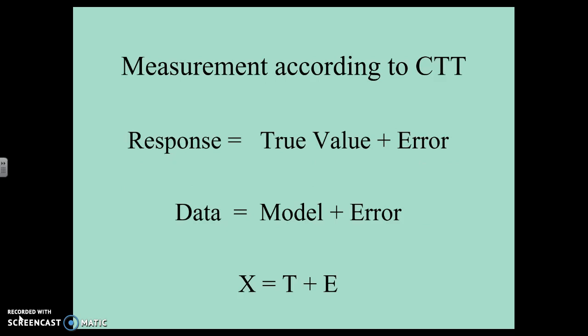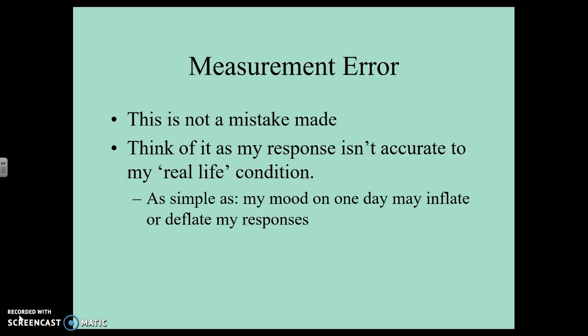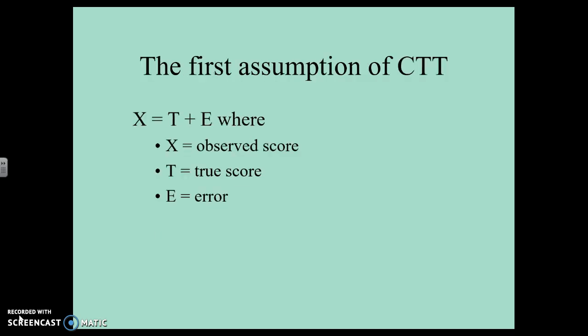So let's talk about classical test theory. According to classical test theory, your response — your raw score — is equal to your true value in real life plus some error. You can think of it this way: the data that we're collecting is equal to the model that we're intending plus some error. Measurement error is not a mistake. It's not that I made a mistake on my anxiety scale or my stats exam. Think of it more as my response isn't accurate to my real life condition — this could be as simple as my mood on that day inflating or deflating my responses. The first assumption of CTT is this equation: your observed score is equal to your true score plus some error.